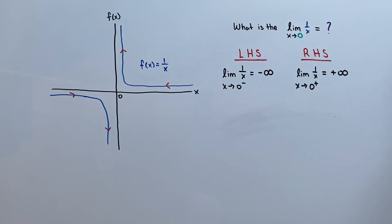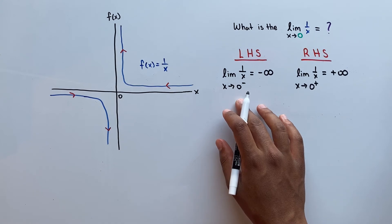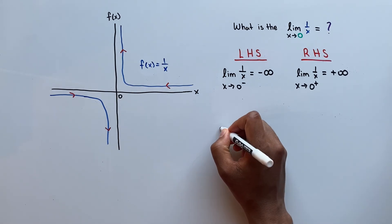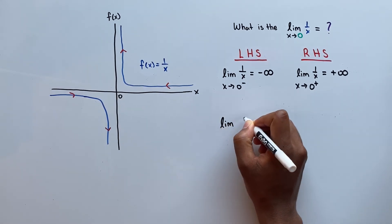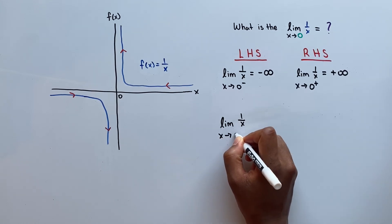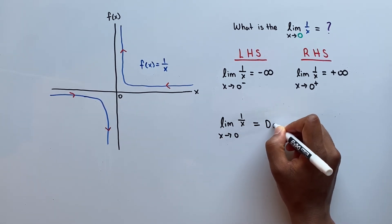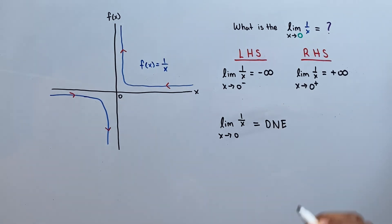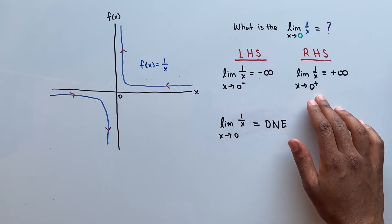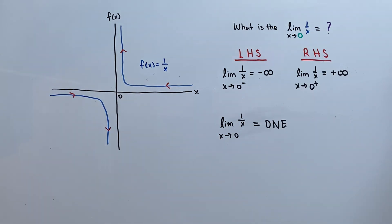And now, since the limits from the left-hand side and the right-hand side do not equal, we can say that the limit of our function as x approaches 0 does not exist. And this is true for all functions: if the left-hand side of the limit does not equal the right-hand side of the limit, then we say that the limit of the function as it approaches that x value does not exist.